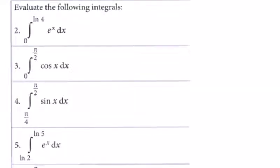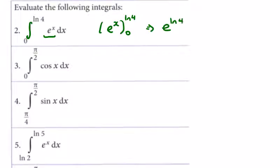Some more integrals — definite integrals, evaluation of integrals. So we integrate e to the power of x, which goes to e to the power of x, between the natural log of 4 and 0. This gives e to the power of the natural log of 4, which is just 4, minus e to the power of 0, which is 1. So 4 minus 1 is 3.